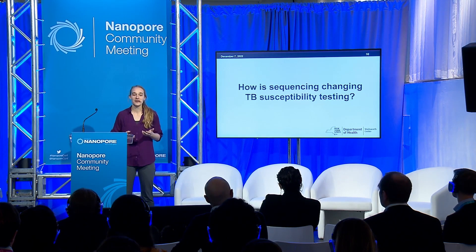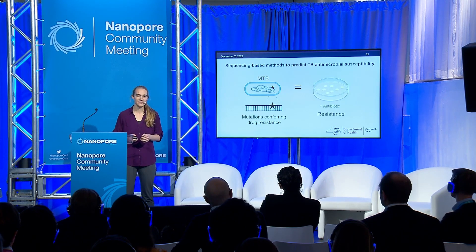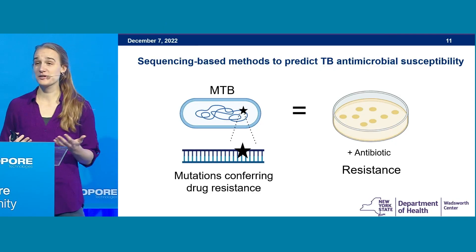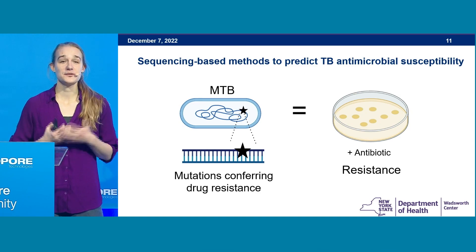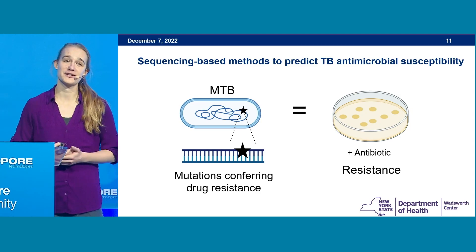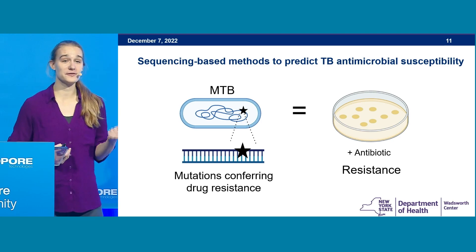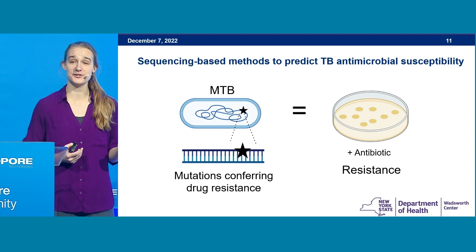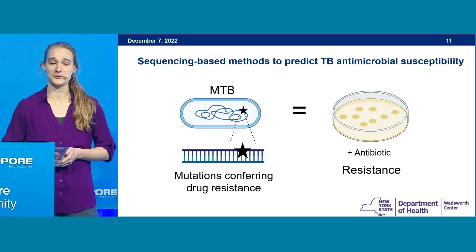Now I want to talk about how sequencing is changing the way we do TB susceptibility testing. In short, sequencing can buy us valuable time. Because the secret to TB's drug resistance lies in its genetic code, we can identify those resistance mutations rather than waiting for the bacterium to grow in the laboratory.